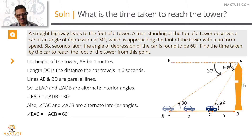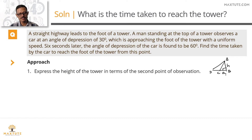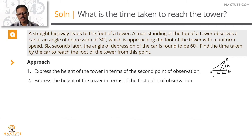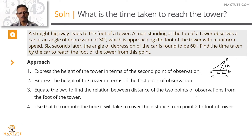The approach is a four-step process. First, express the height of the tower H in terms of distance BC, assigned variable A units. Second, express H in terms of DB. Third, because H is common to both, equate them to get the relationship between DC and CB. Finally, compute the time to cover CB, given that it takes 6 seconds to cover DC.